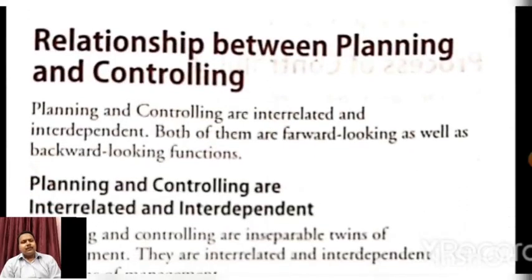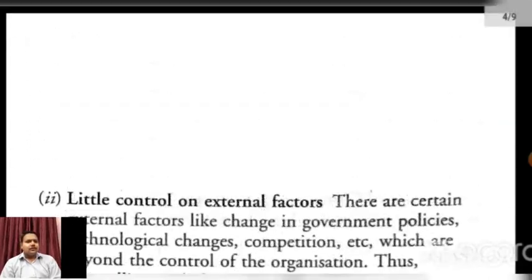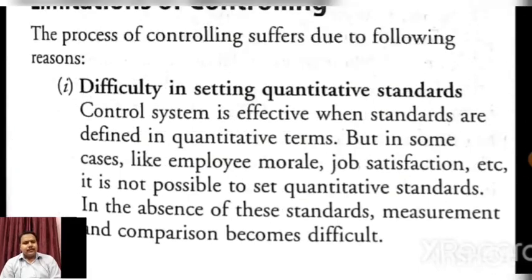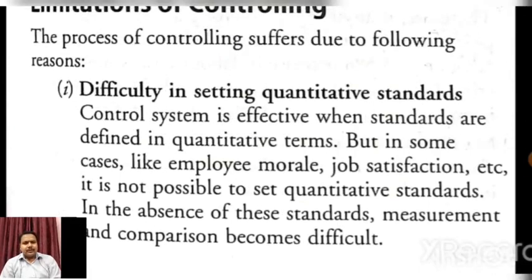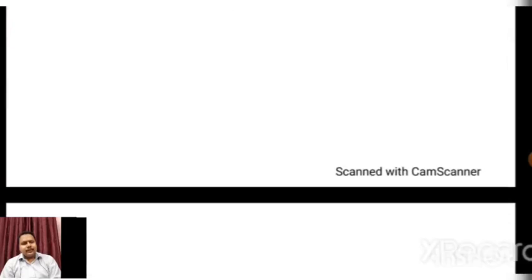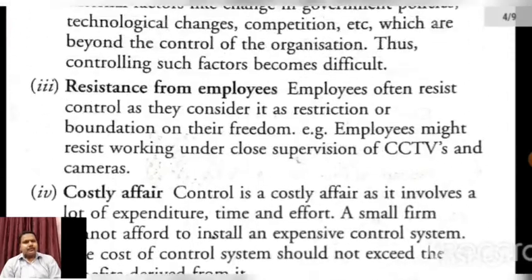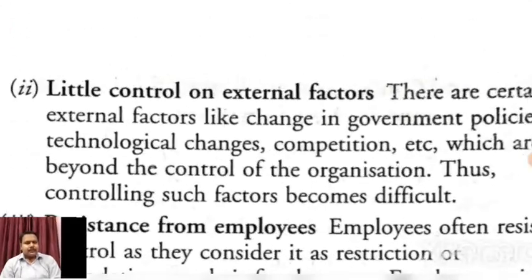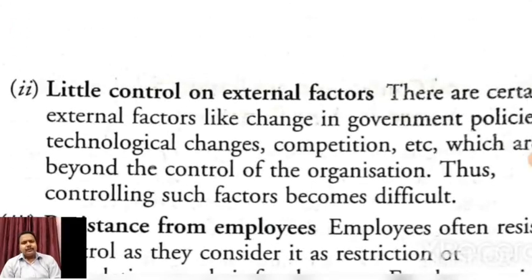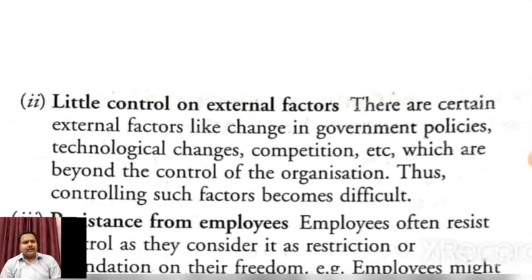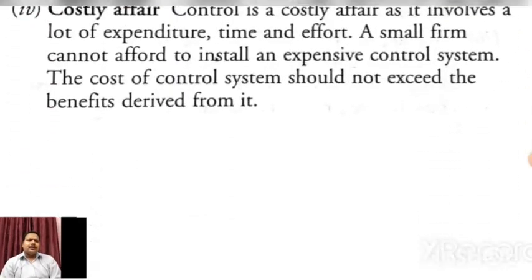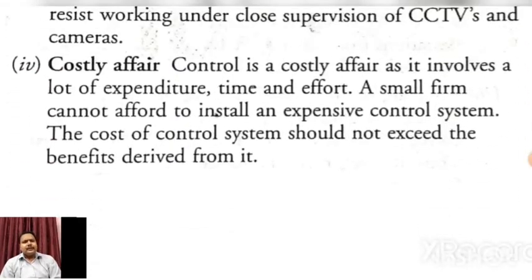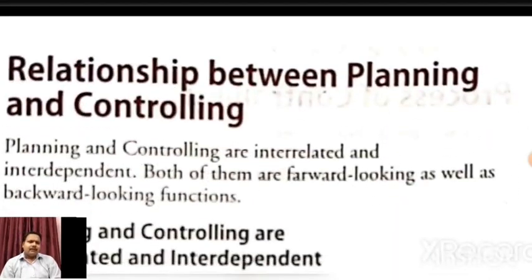So in summary, we have studied the limitations of controlling: first, difficulty in setting quantitative standard; second, little control on external forces; third, resistance from employees; and fourth, costly affair. Now we will move to the next topic of this chapter — that is the relationship between planning and controlling.